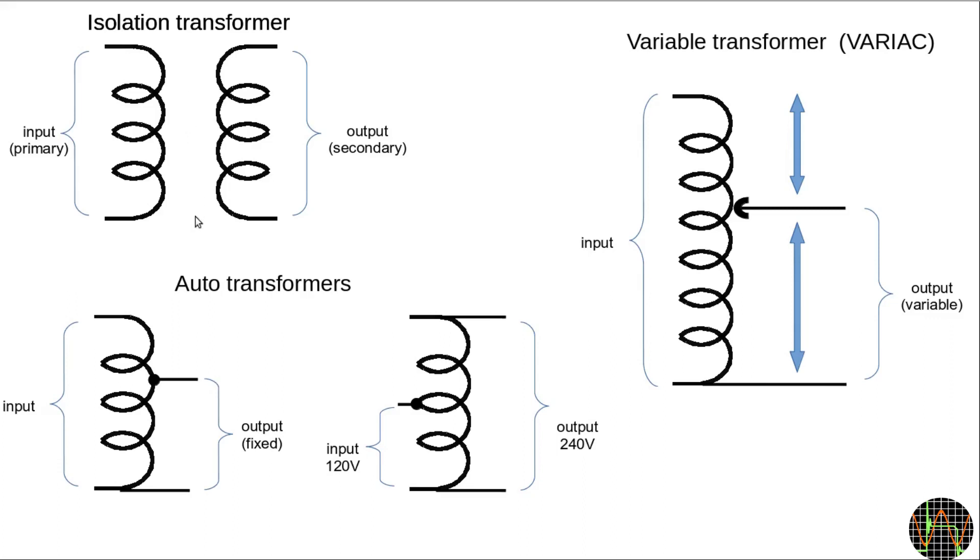There is a different type of transformer out there called an autotransformer, where the secondary coil and its isolation material have been eliminated, making this a much cheaper construction. Instead, the output reuses a part of the input coil.